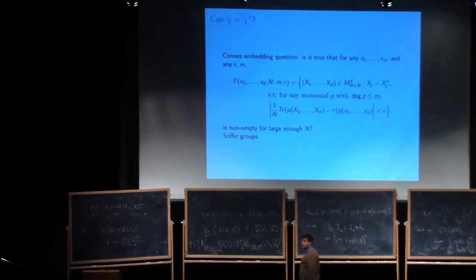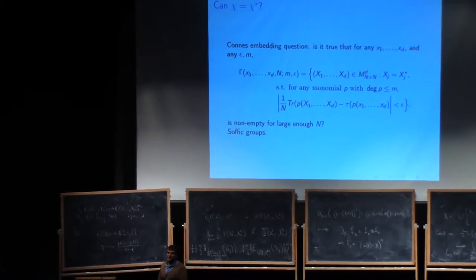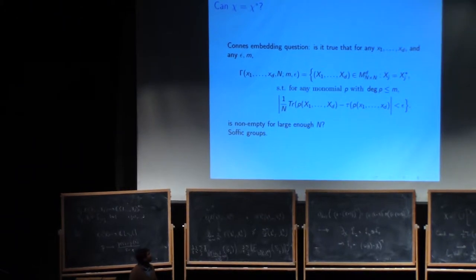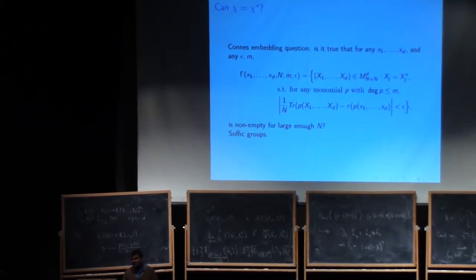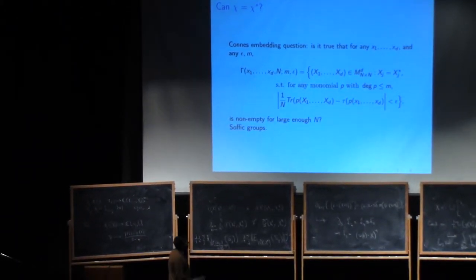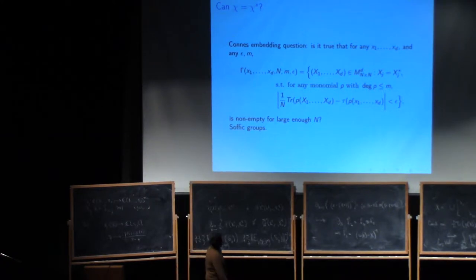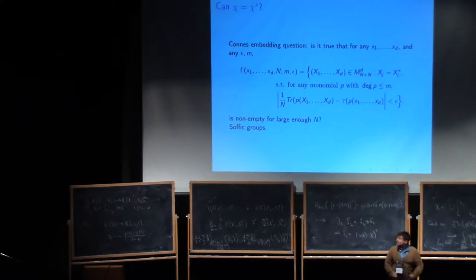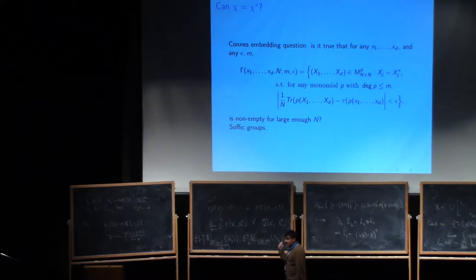Now, the next question you can ask is, since there's such a nice argument maybe that χ is less equal than χ star and so forth, maybe you should actually go for the equality. I mean, that would be nice. Of course, when d equals 1, there is equality. There is, unfortunately, slight monstrosity that impedes progress, and this monster is called the Connes embedding question. So the Connes embedding question, very simply put, is whether these sets are always eventually non-empty.